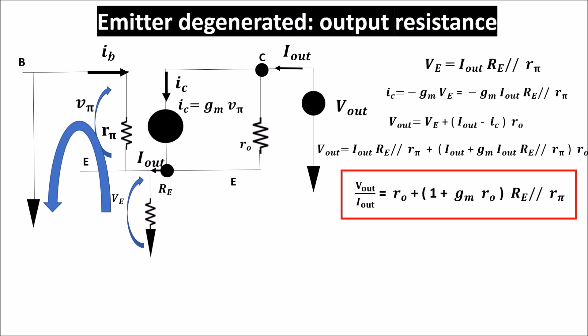So by adding the emitter resistance, we get a negative feedback which stabilizes the mirror configuration, but also it stabilizes the output current against output voltage fluctuation.